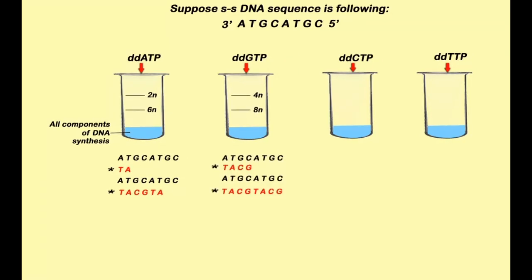In the second tube we added ddGTP, so this G will be added. Let us see where G can be added. G will be added where there is C. So there are two positions with C. Here you see TACG - as soon as the ddGTP was added the chain was terminated. In this case the G was added at the end, so you get fragments which are 4 nucleotides long and 8 nucleotides long. Similarly in the third tube you get fragments 3 nucleotides long and 7 nucleotides long.